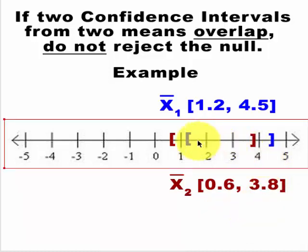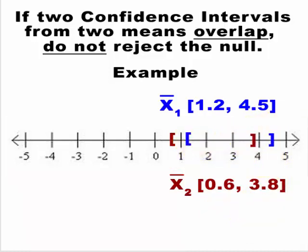You'll see that there are numbers on this number line that both of these confidence intervals share. Example: what if the true mean was 3? Both of these confidence intervals could contain that possibility. 3 is between these two values and it's between these two values as well.